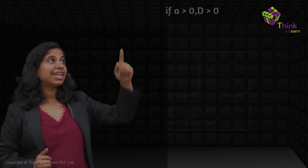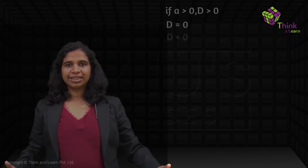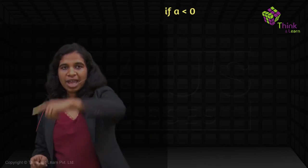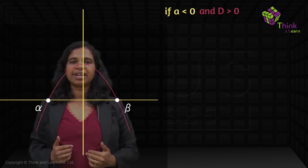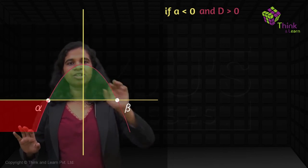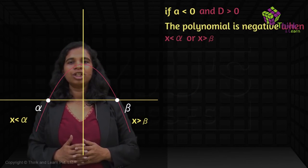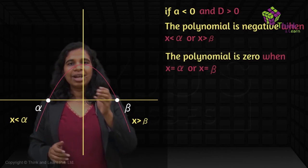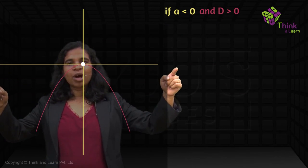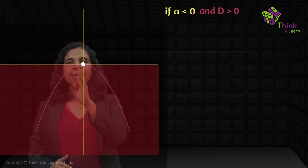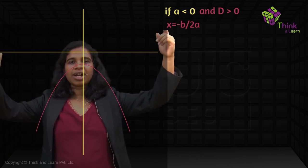Now what happens when A is less than 0? We have a downward-facing curve. When D is greater than 0, it'll be the exact reverse. Here it's negative, here it's positive, here it's negative. So whenever x is less than alpha or x is greater than beta, the polynomial is negative. When equal to alpha and beta, it's 0. Between alpha and beta, it is positive — the exact reverse of before. When the x-axis is touching it at one point, it's negative everywhere except at that maximum point x = −b/2a where y = 0. When the x-axis goes further up, it's always negative.